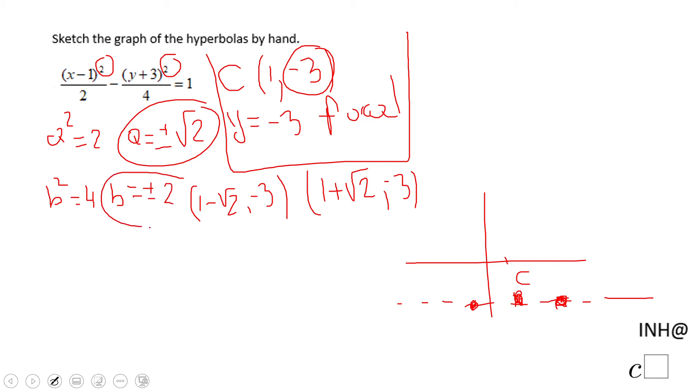So we get this plus and minus 2, which allows us to write now the equation of the asymptotes. Let me write it this way: y plus 3, y minus k, right, y minus negative 3...